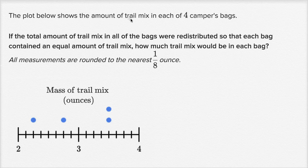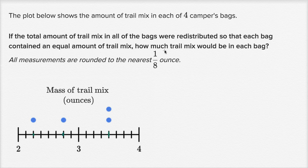The plot below shows the amount of trail mix in each of four campers' bags. There's a dot for each camper's bag. If the total amount of trail mix in all of the bags were redistributed so that each bag contained an equal amount of trail mix, how much trail mix would be in each bag? All measurements are rounded to the nearest eighth of an ounce.